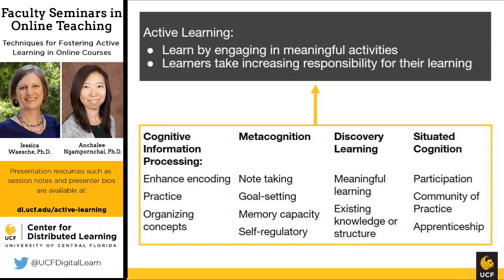Active learning is usually defined as learning by engaging in meaningful activities — ones where learners take increasing responsibility for their learning. It is a simple concept that describes implications for instruction drawn from theories in educational psychology. For example, cognitive information processing, or CIP, deals with memory — specifically how we move new knowledge from short-term memory into long-term memory. CIP suggests that knowledge retention requires students to practice in different situations, organize concepts meaningfully, and connect new concepts to existing ones. CIP advocates for activities such as concept mapping, visual organization of concepts, and advanced organizers.